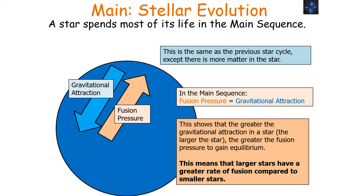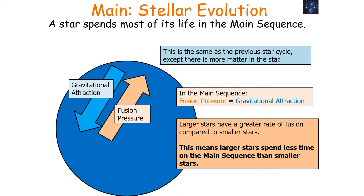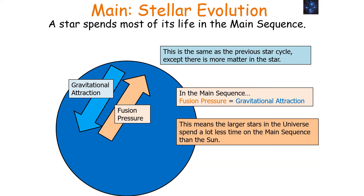The greater the gravitational attraction in the star — the larger the star — the greater the fusion pressure needed to gain equilibrium. This means larger stars have to have a greater rate of fusion compared to smaller stars. So larger stars have a greater rate of fusion, meaning they spend less time on the main sequence than smaller stars. Larger stars in the universe spend a lot less time on the main sequence than our own sun.